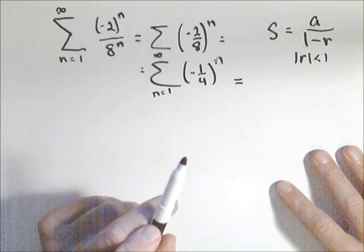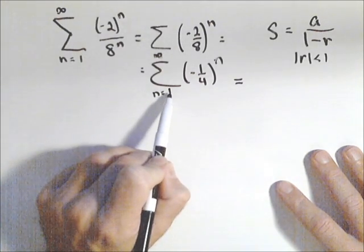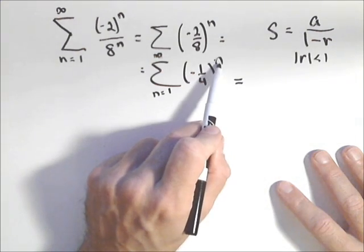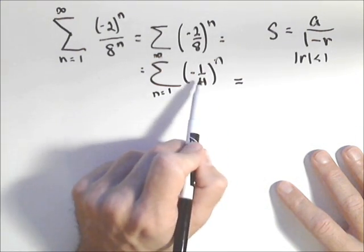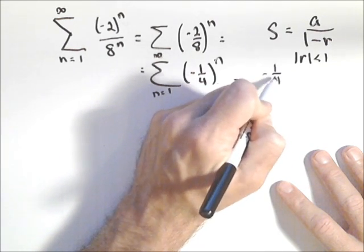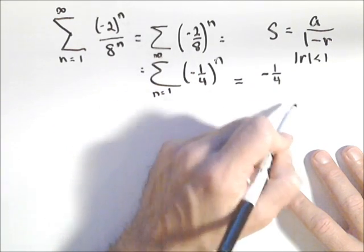And what we have to do is take the first term, and that's important. Make sure you actually calculate the first term. Because I have n equals one for my first term, when I put in one here, I'll get negative one-fourth to the first, which is negative one-fourth. So that will be my first term.